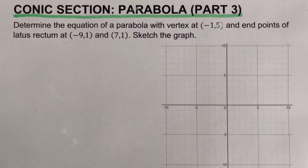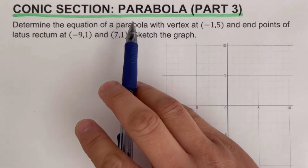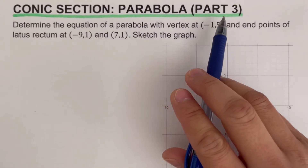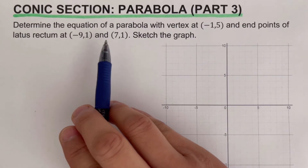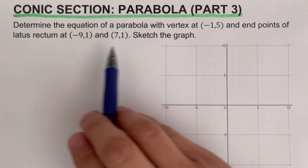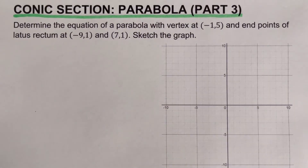Hello everyone. This video focuses on conic sections, specifically on parabola with vertex at hk, and this is the third part. In this part, we're supposed to determine the equation of a parabola given the coordinate of the vertex and the endpoints of the latus rectum, and we're supposed to sketch the graph. Before we jump into the example, let's have a review on the basics of parabola with vertex at hk.